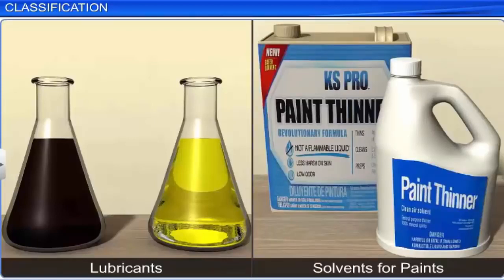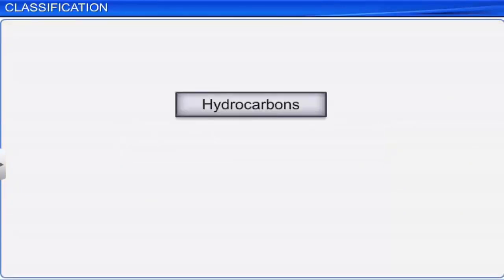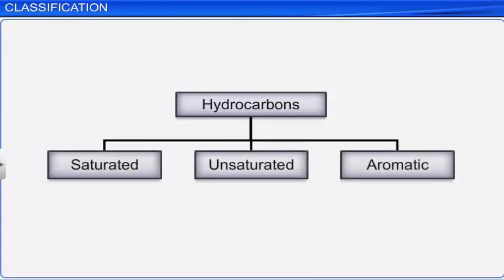Hence, we can say that the hydrocarbons act as sources of energy. Now, let us look at the classification of hydrocarbons. On the basis of carbon skeleton, i.e., the type of carbon-carbon bonds, hydrocarbons can be classified into three main categories: saturated, unsaturated, and aromatic hydrocarbons.